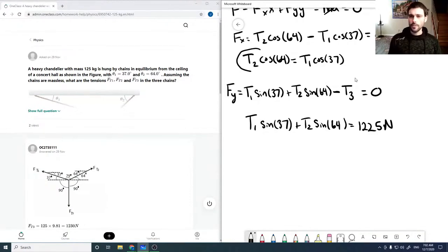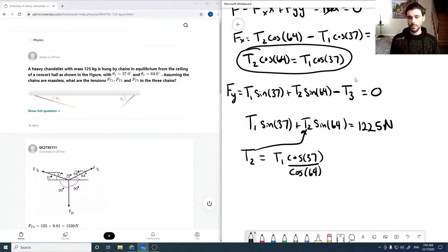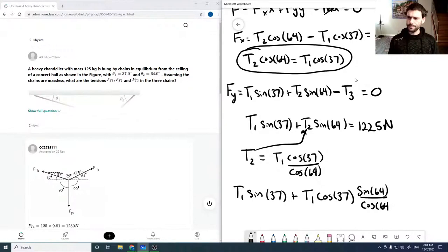And then from the x equation we can solve for, say, T2. We can pick any of them really. But I'm just going to say T2 is T1 cos 37 over cos 64. Plugging this into the y equation we get T1 sine of 37 plus T1 cos 37 sine of 64 over cos 64 equals 1225 newtons.